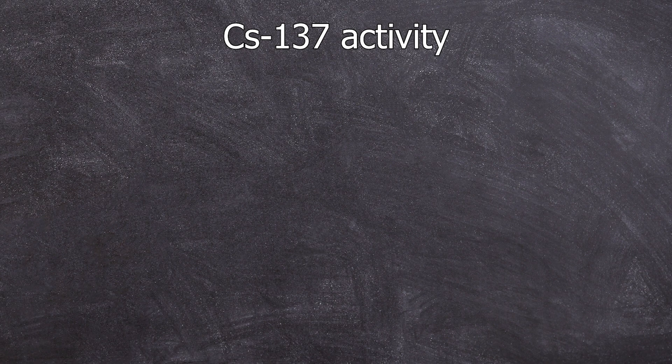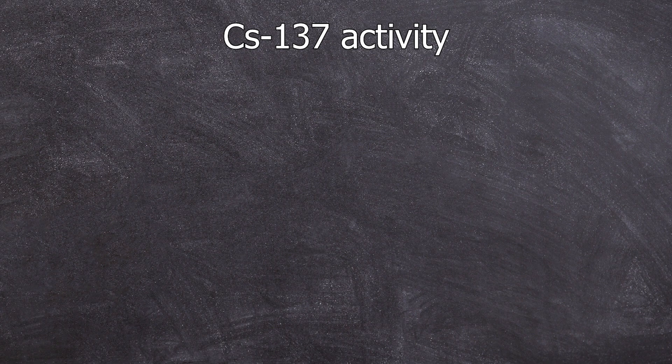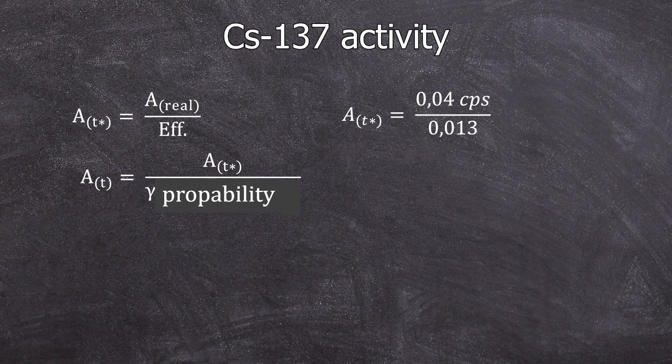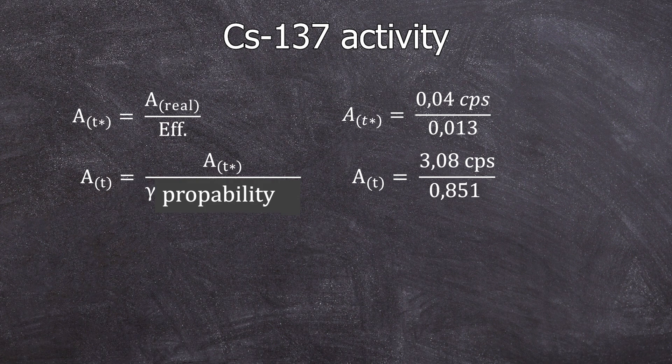And now we can finally start the calculations. For the cesium-137, we now have to calculate how many 661 kiloelectron volt gamma photons were actually emitted using the efficiency of the Geely detector. For now, just accept the efficiency of the detector. I will show you in the future how you can determine its efficiency. Since not every decay results in a 661 kiloelectron volt gamma photon, but only 85.1%, we can calculate that the activity of cesium-137 is 3.6 becquerels.